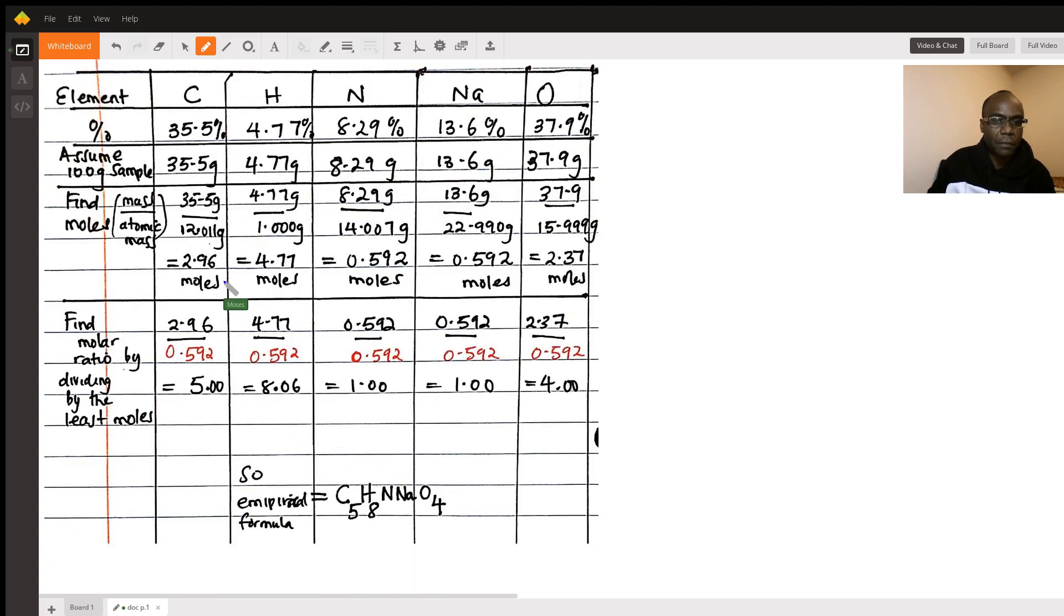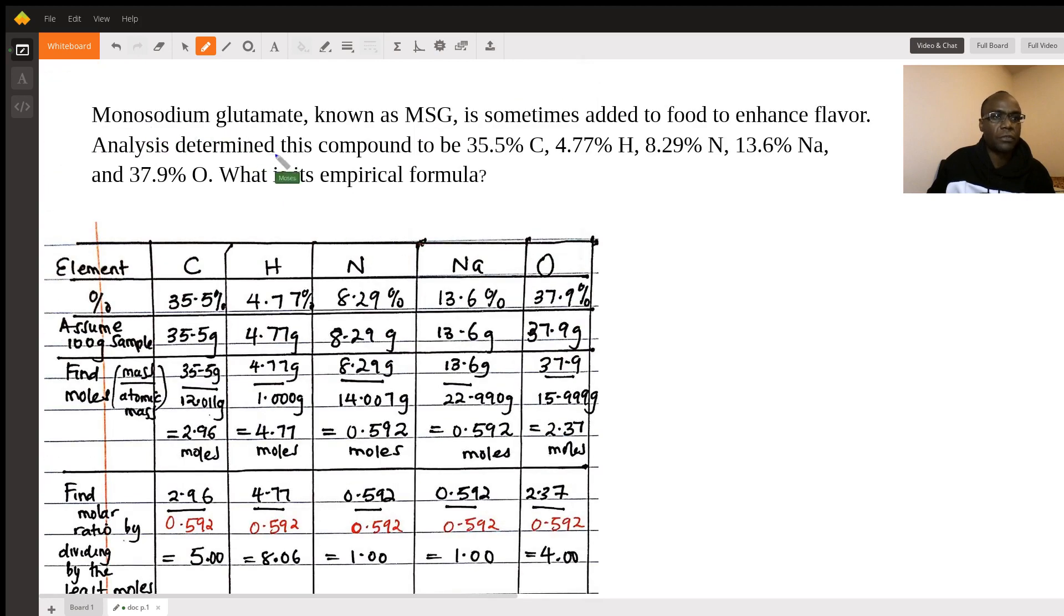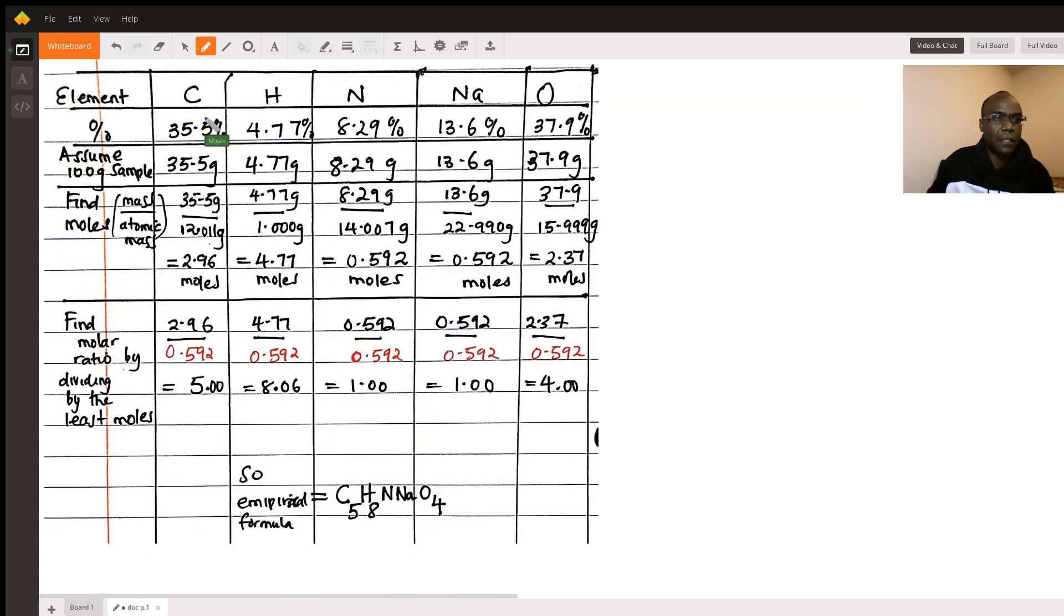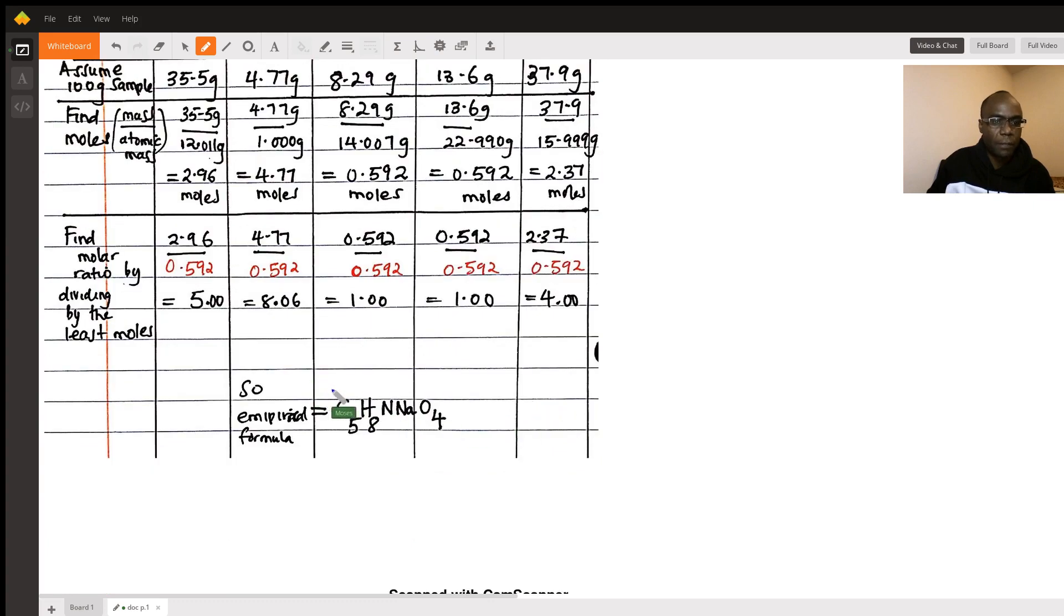So those whole numbers will represent how many carbons, hydrogen, nitrogen, or sodium or oxygen I have in monosodium glutamate. Turns out carbon will be 5, hydrogen will be 8, nitrogen will be 1, sodium will be 1, oxygen will be 4. So the empirical formula is right there.